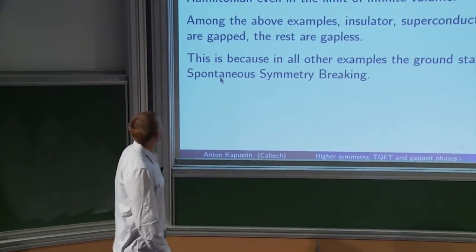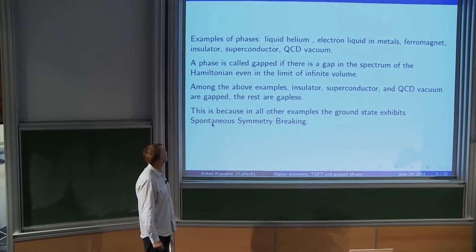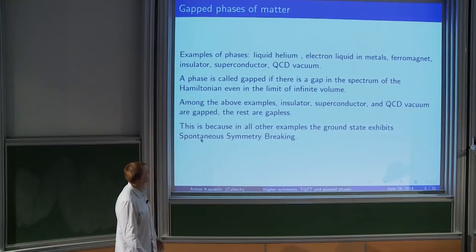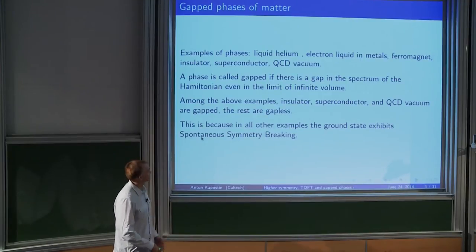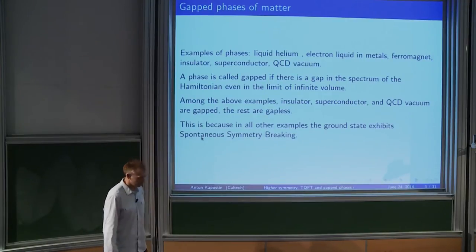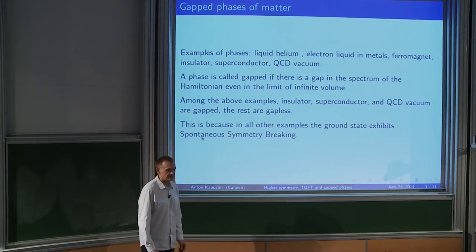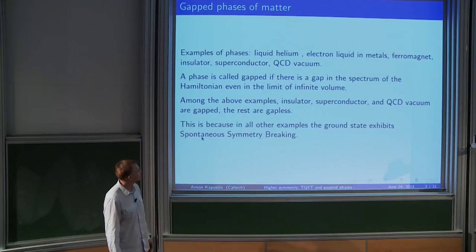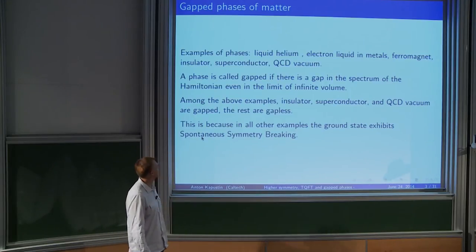The motivation is to classify what's called gapped phases of matter. What are phases of matter? There are states of matter which define a sort of homotopy class — you deform the Hamiltonian and nothing qualitative changes. We can usually describe a phase by pointing out some particular Hamiltonian. Examples include liquid helium, electron liquid metals, ferromagnets, insulators, superconductors, or a very interesting example: the vacuum of QCD.